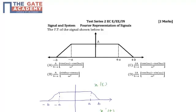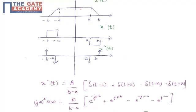What we do here is we have taken the following signal given, let it be x of t. So what we will do is we will take the derivative of this signal. The derivative of this signal looks like this.